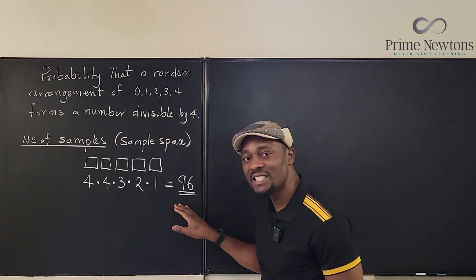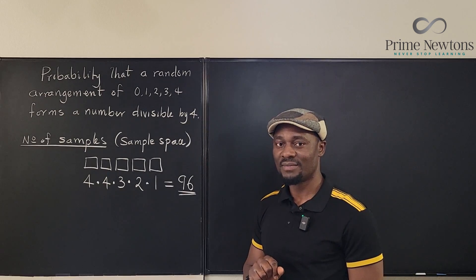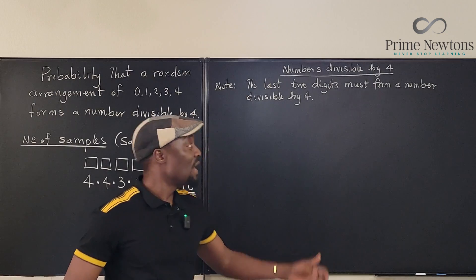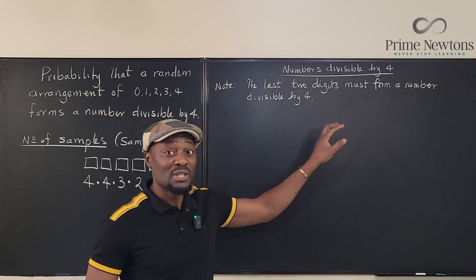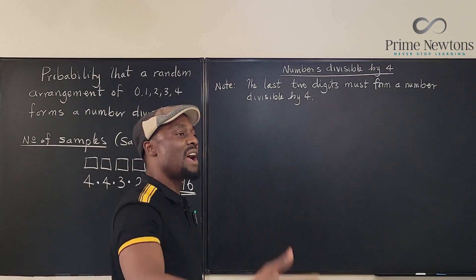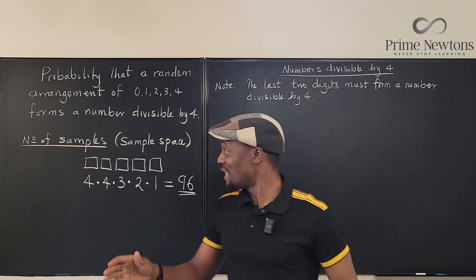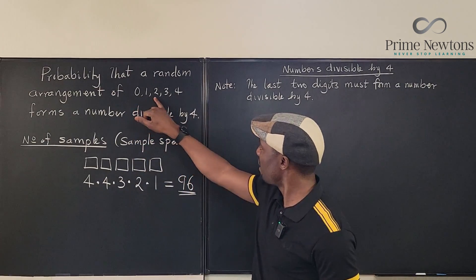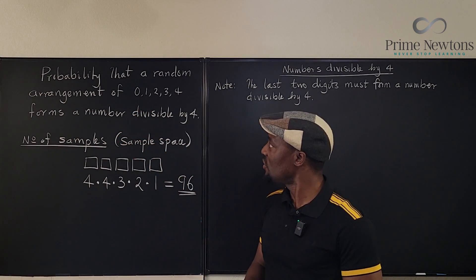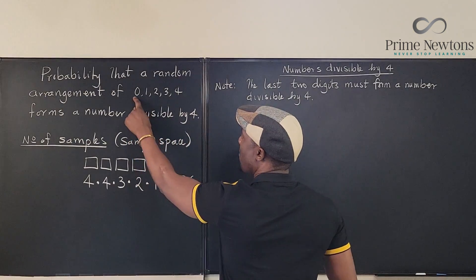Of these 96 numbers, how many of them are divisible by four? To get all the numbers divisible by four, we have to recognize that the last two digits must form a number divisible by four. So what can we have as our last two digits? There are two ways — you can easily just list what combinations of these digits will form numbers divisible by four.